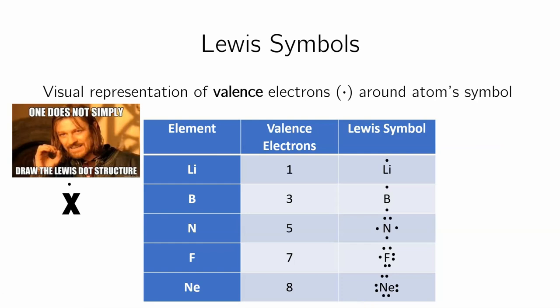The way we draw that, as this guy tells you, one does not simply draw the Lewis dot structure. Let me show you. For lithium, I'll put one dot. If I have two like boron, I will write one, two. By the way, this boron is missing a dot here. If I have three for boron, it will look like one, two, three. For four, I have one, two, three, four. When I have five like nitrogen, I'll put the dot up there, then six, then seven, then eight. We don't do it so that it's one, two, three, four, five, six, seven, eight. We distribute it around, and then we add the second. We go around the clock twice.